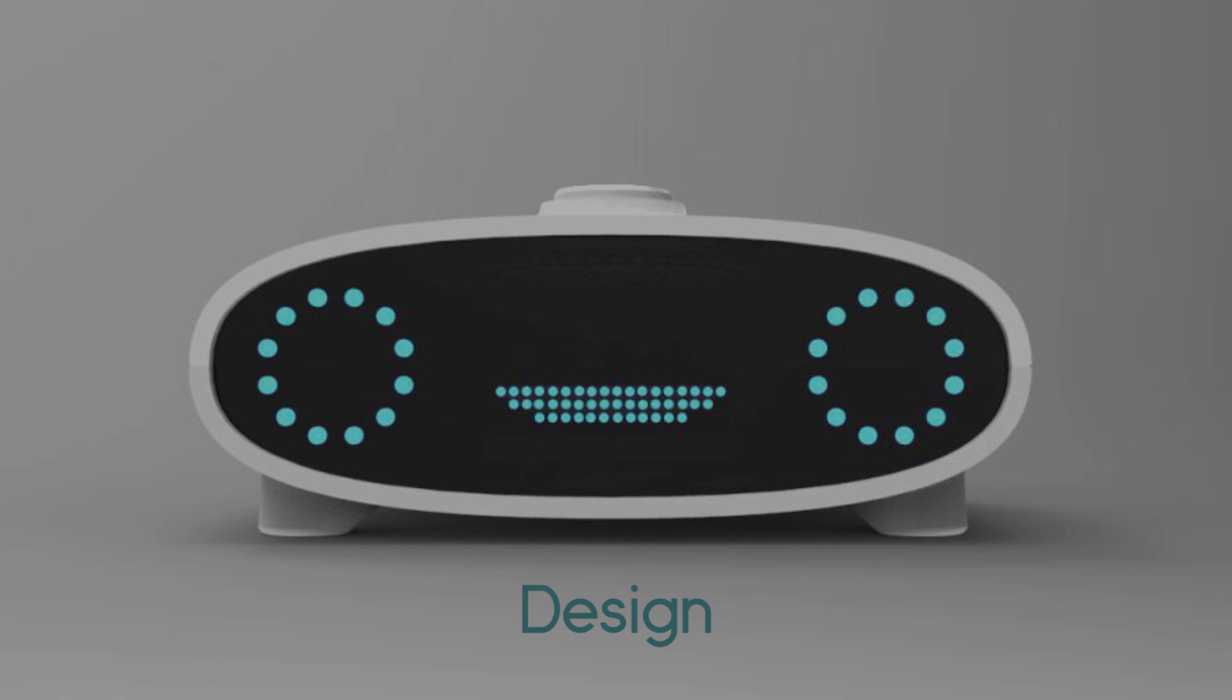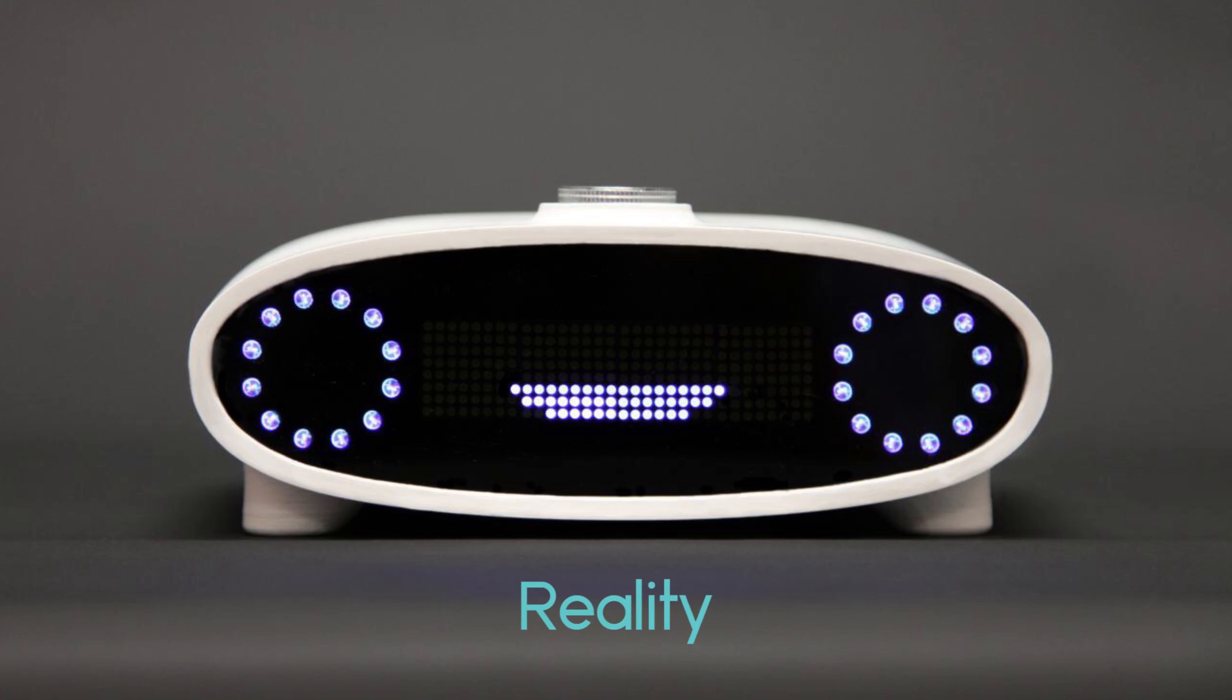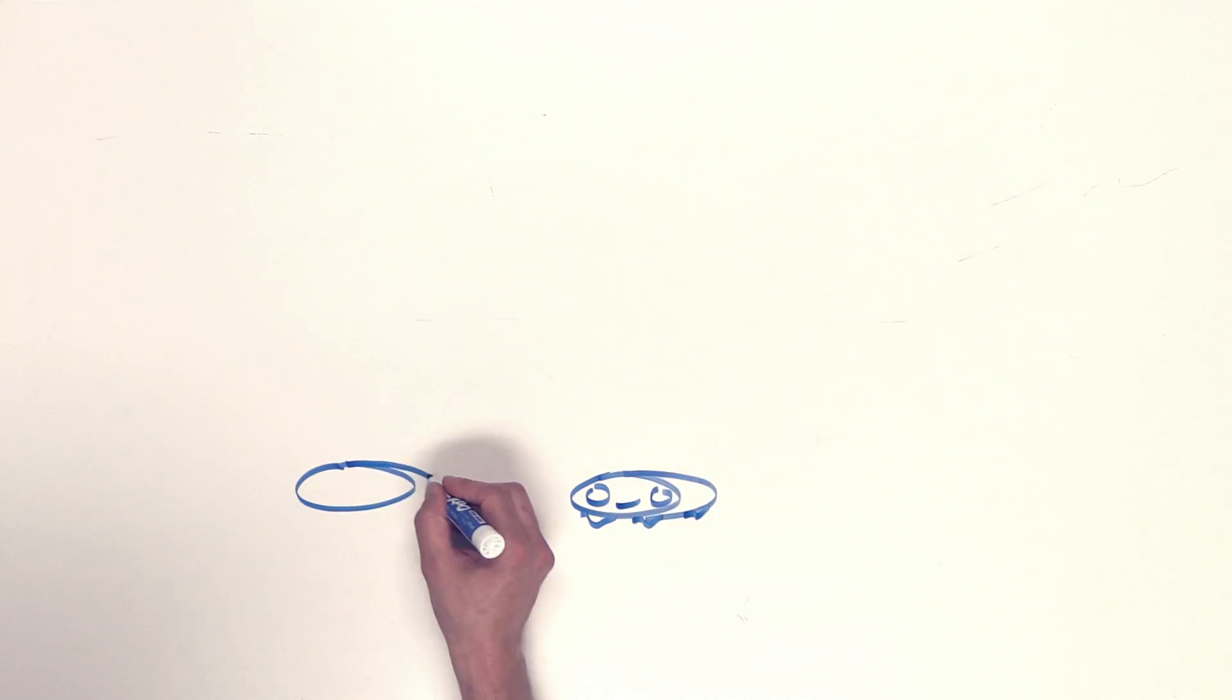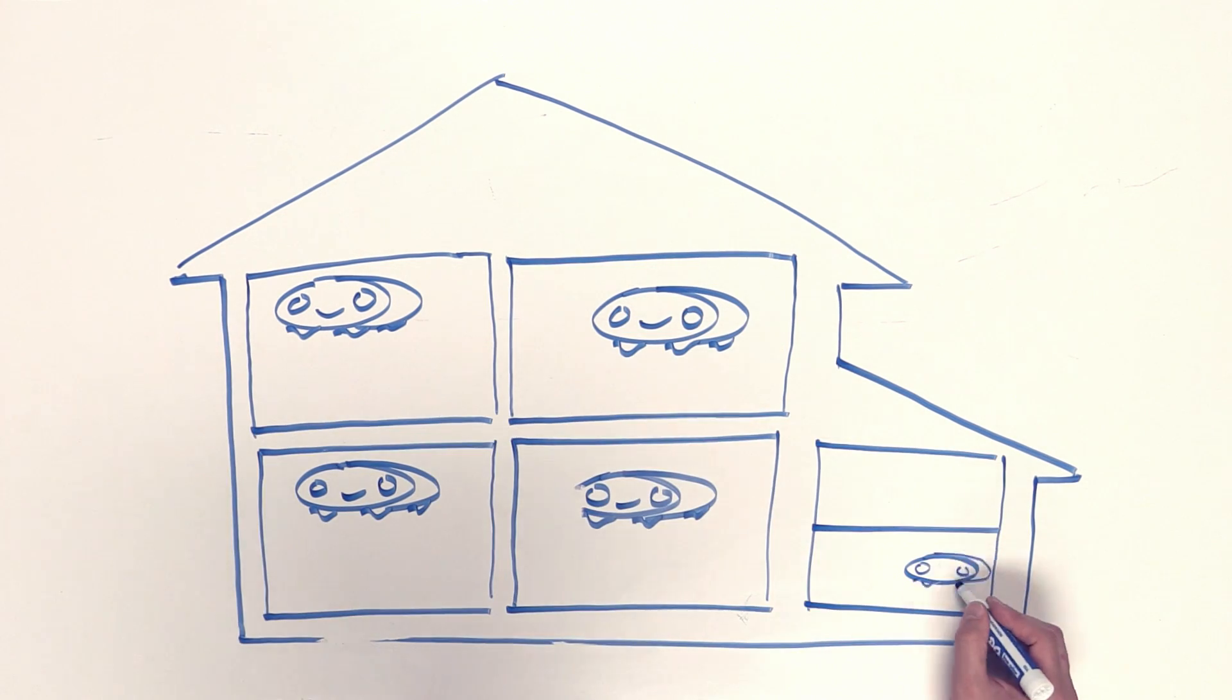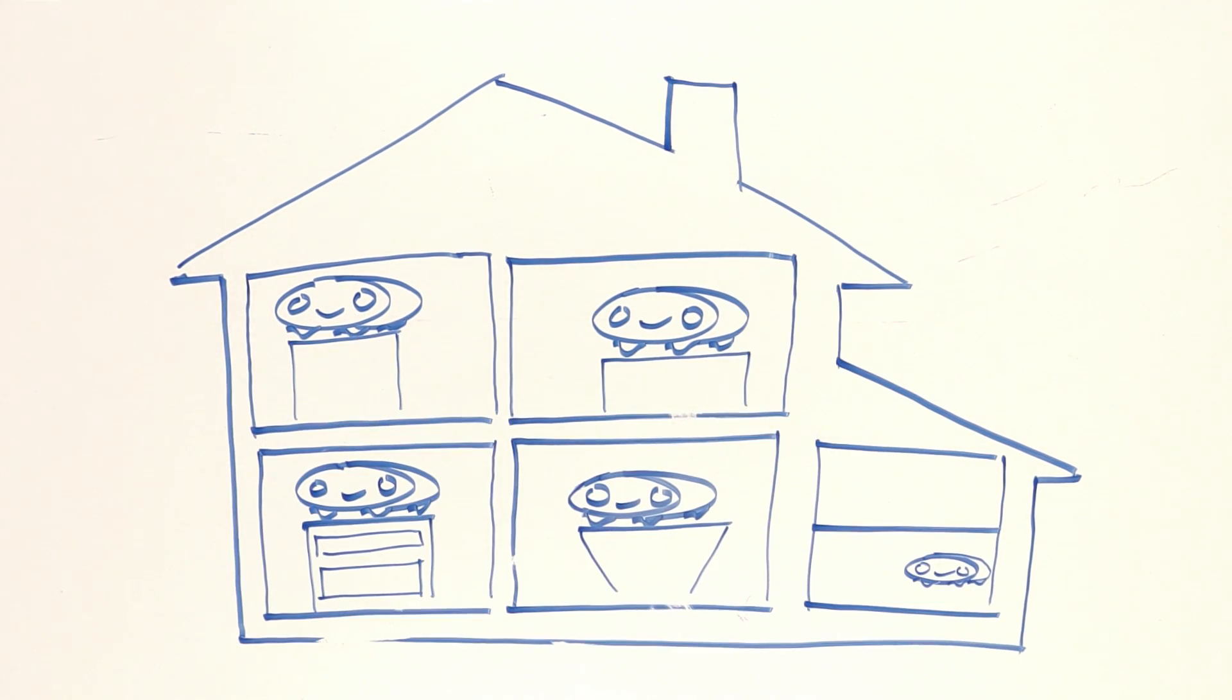Introducing Mycroft, the first open source artificial intelligence for your whole home. It connects to your Wi-Fi and is so affordable that you can have one in each room, from the kitchen to the living room, bedroom, and even one in the garage.